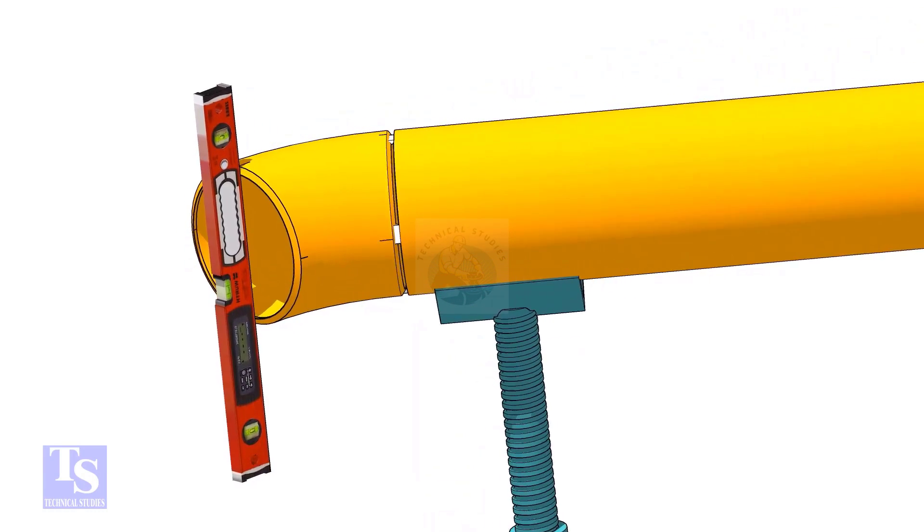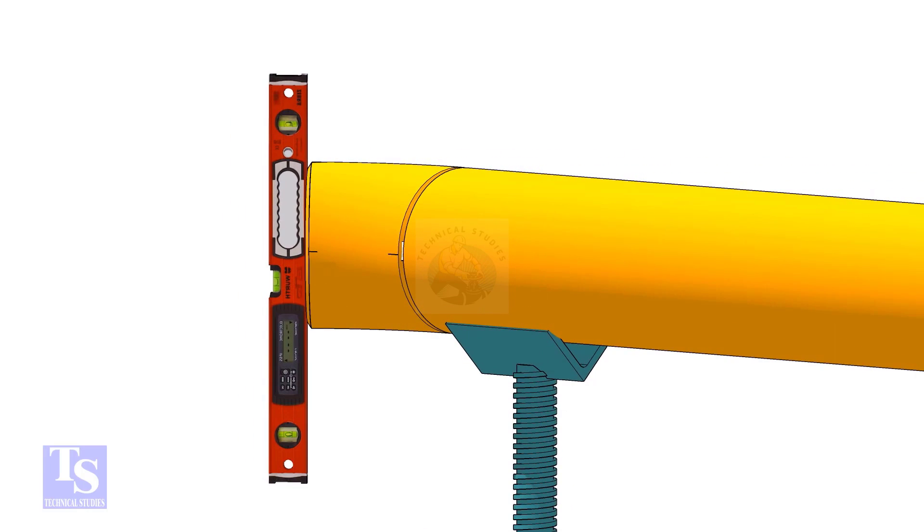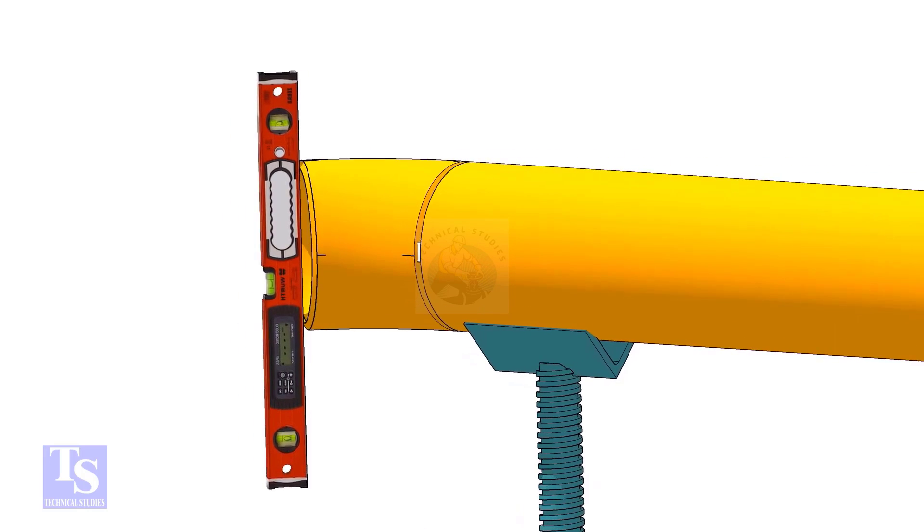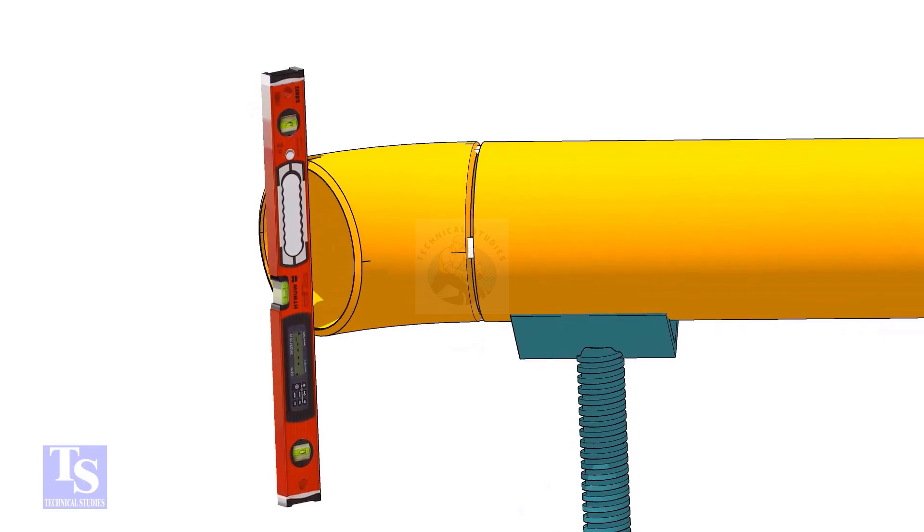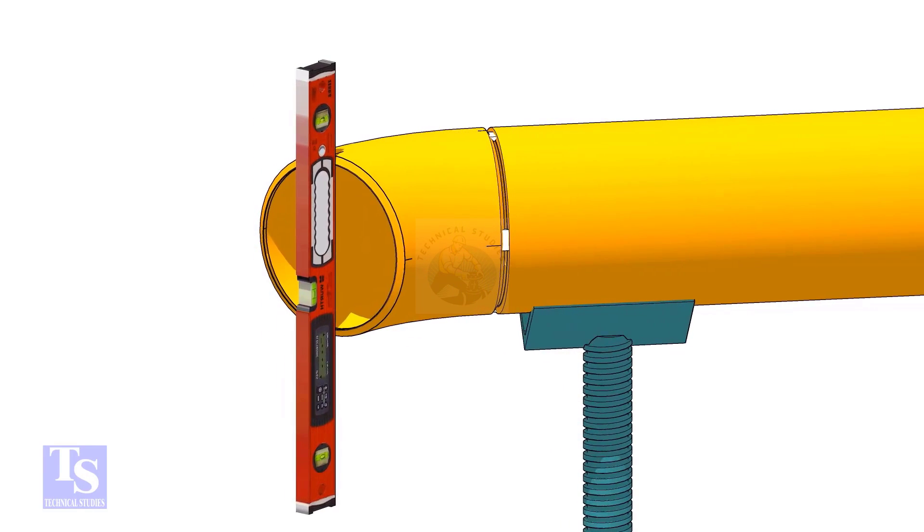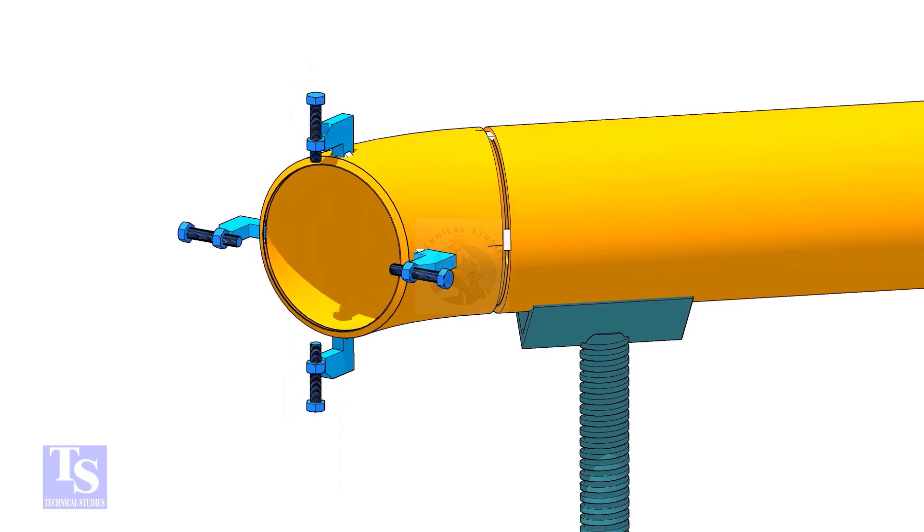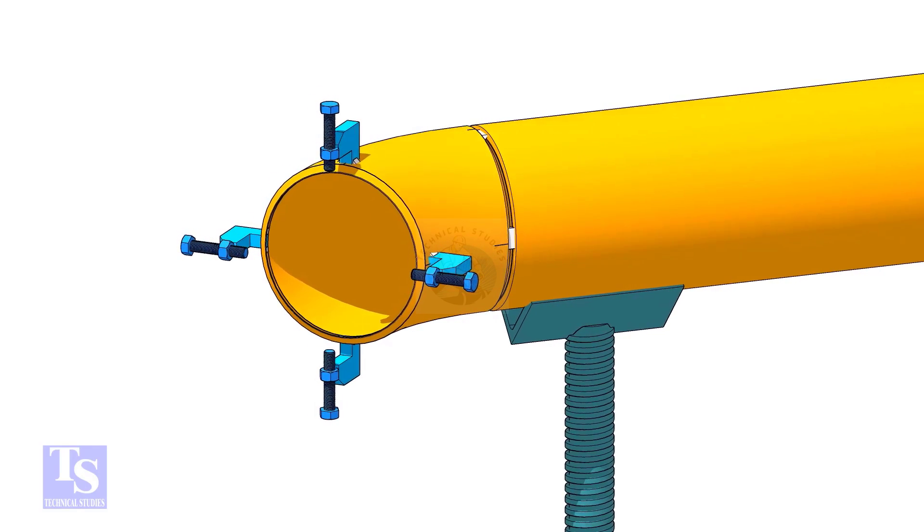Level the elbow face through the center marks. Tack weld four jack bolts as shown.